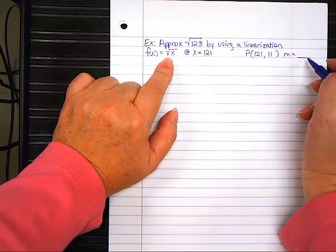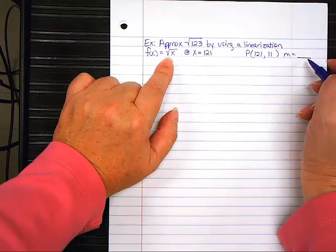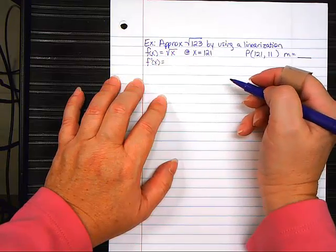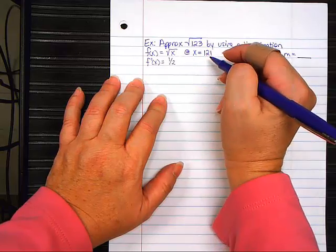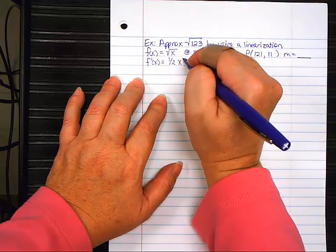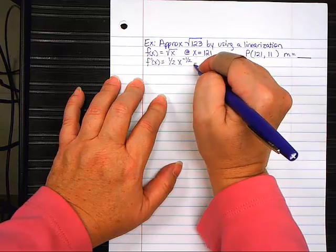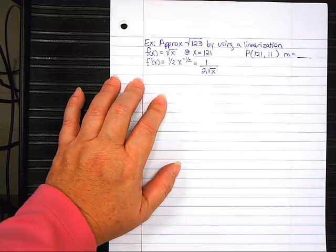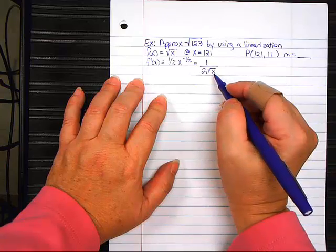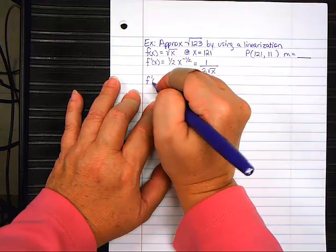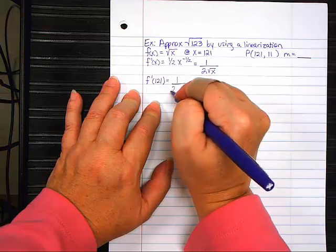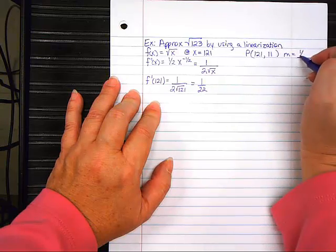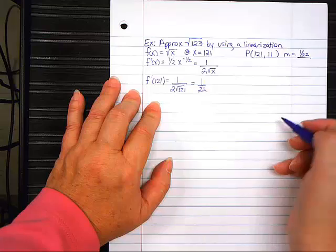Because if you plug 121 into here, you get 11. We're going to slow down a little bit because these numbers are a little bit different. How do we find the m again? Take the derivative. Take the derivative and then plug in 121. So, f prime of x equals 1 half x to the negative 1 half, which means you have 1 over 2 square roots of x. Do you agree with that? Now, plug in 121. Then, f prime of 121 would be 1 over 2 square roots of 121, which would be 1 over 22. That's your slope.